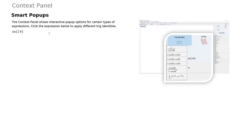Another important part of the Context Panel is the ability to apply smart popups to your expressions. So say if we've got something like sine of two theta, the smart popups at the top of the Context Panel give you previews of the results of applying various trig identities, applying 2D plots, expansions, and much more.